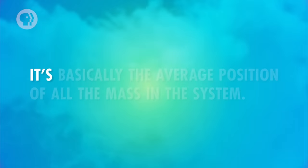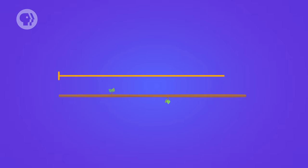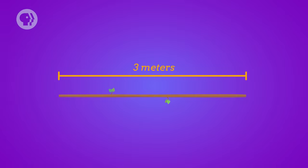When you throw a hammer, for example, it's going to rotate around its center of mass. So what is center of mass? It's basically the average position of all the mass in the system. Say you have a 3-meter-long stick, which we'll pretend is massless, with a 2-kilogram ball stuck on either end. It's easy to see where the center of mass should be. The mass is distributed symmetrically, so its center is going to be right in the middle of the stick.